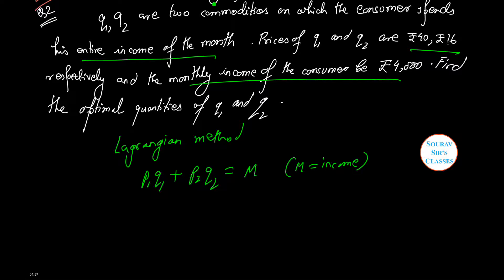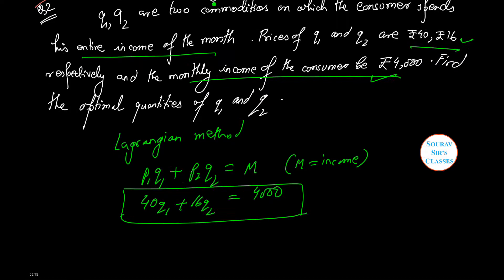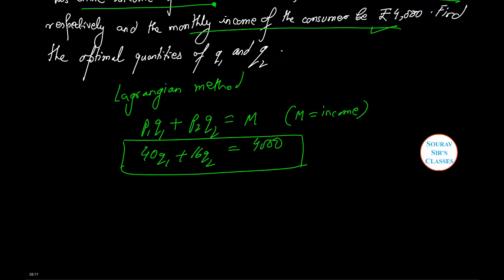Now let us put the three values that we have in the question: 40 Q1 plus 16 Q2 equals 4000. Now let lambda be the Lagrangian multiplier.